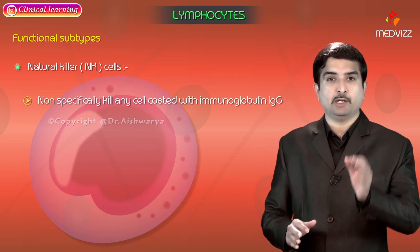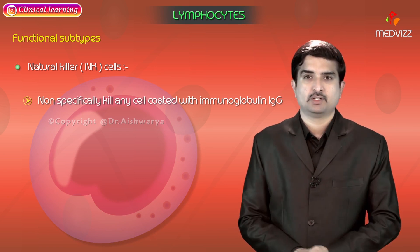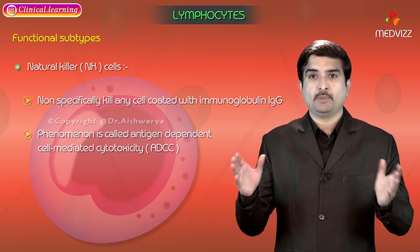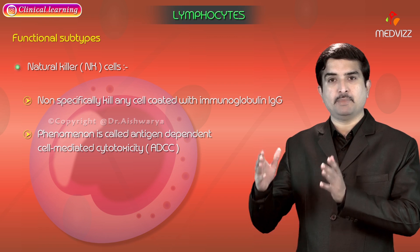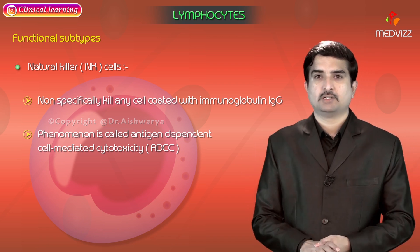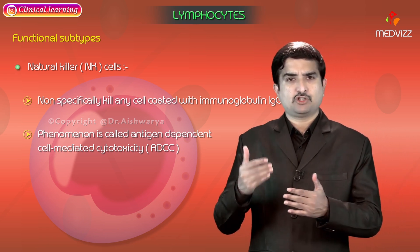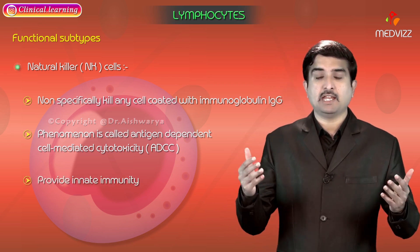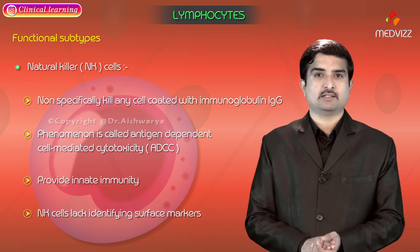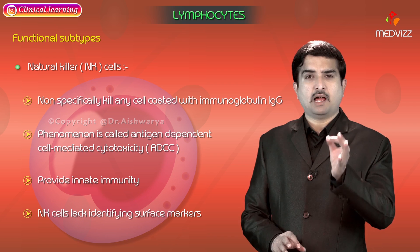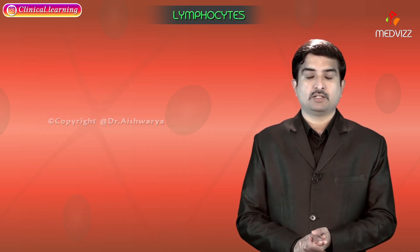Natural killer cells are lymphocyte-like cells that non-specifically kill any cell coated with immunoglobulin G (IgG). This phenomenon is called antigen-dependent cell-mediated cytotoxicity. Natural killer cells provide innate immunity and lack identifying surface markers.